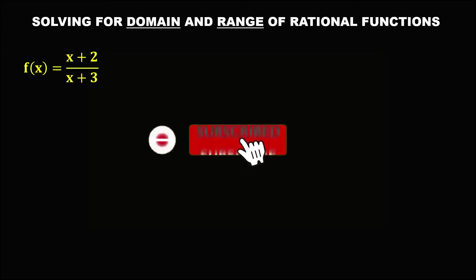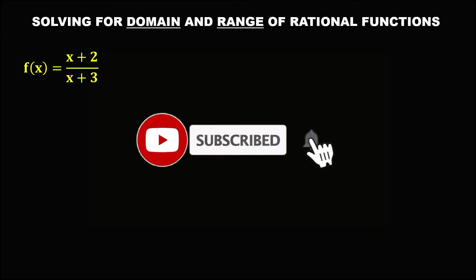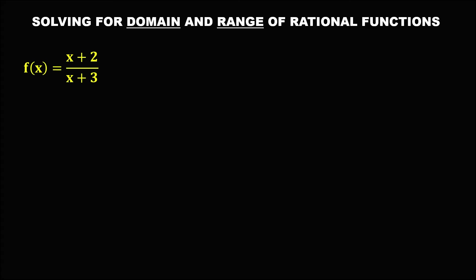Let's solve this problem. In solving for the domain and the range of a rational function, from this given, first, to find the domain, equate the denominator to 0. So we have x plus 3 equals 0.